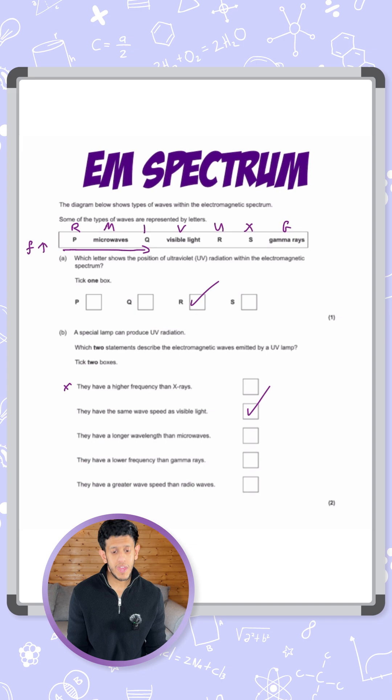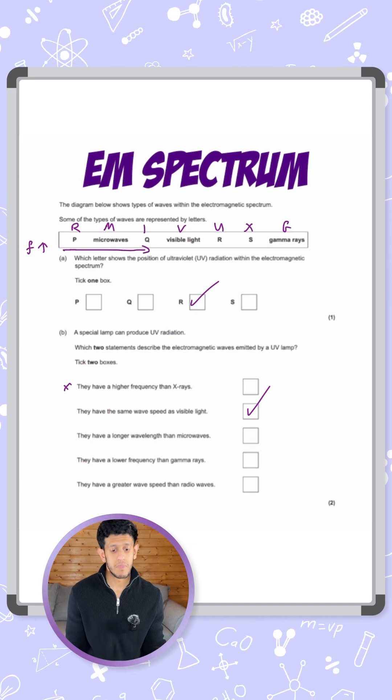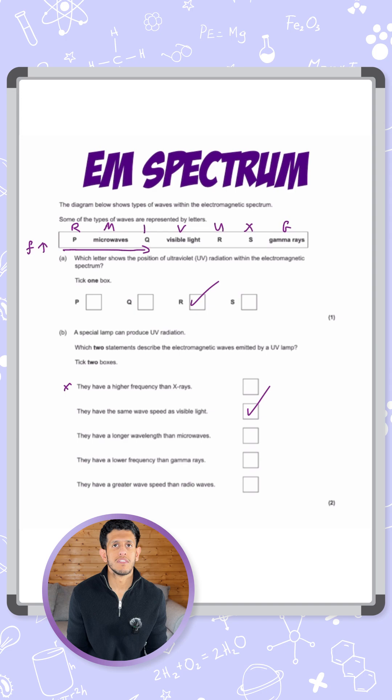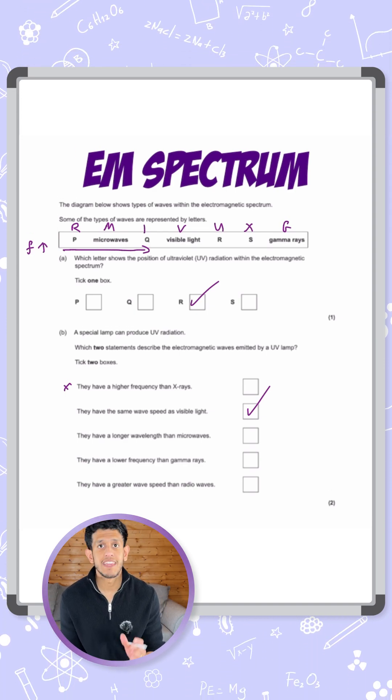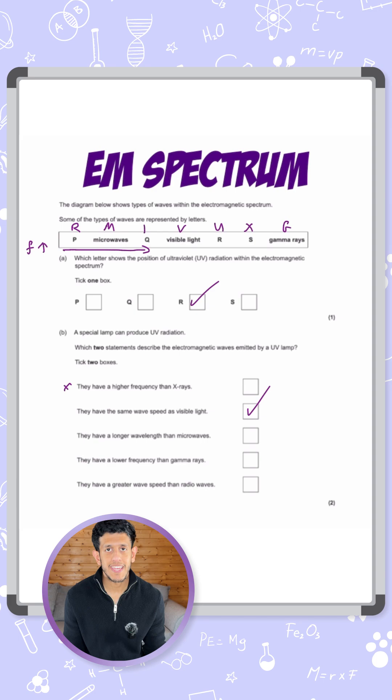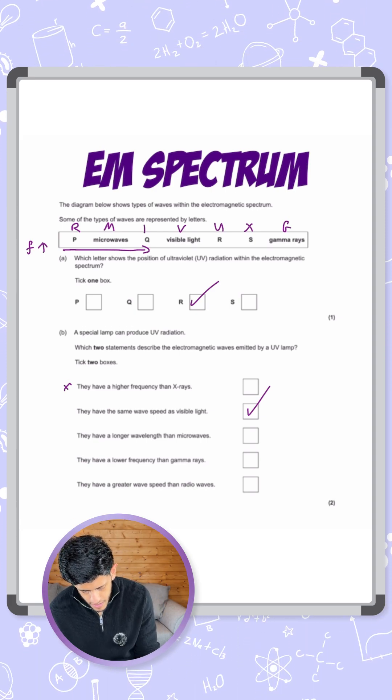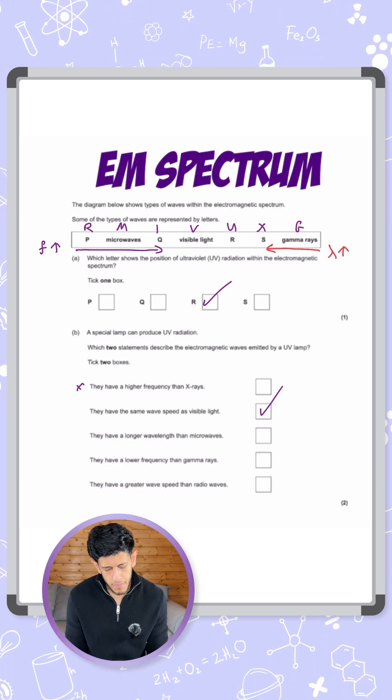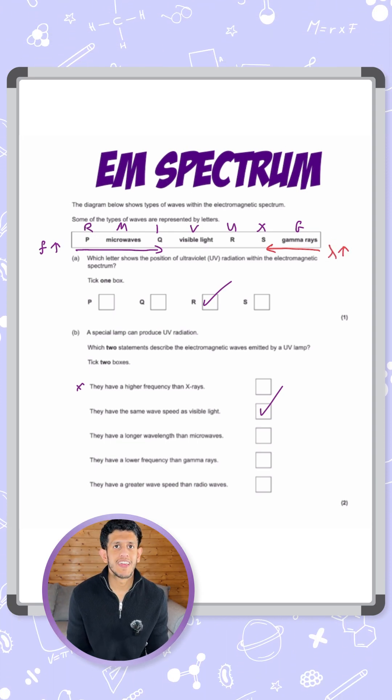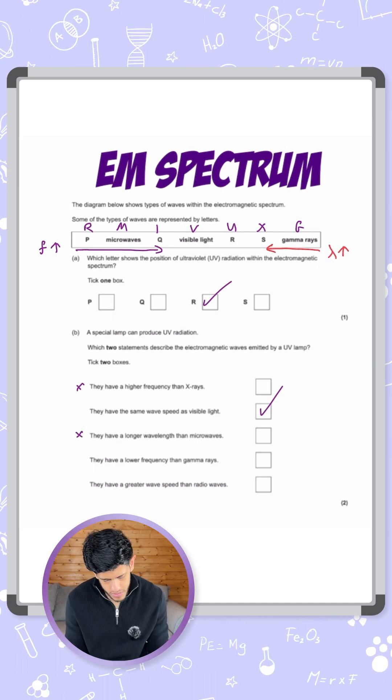It says they have a longer wavelength than microwaves. Again, for frequency it increases from left to right as you can see in the spectrum at the top. But for wavelength it increases the other way. Gamma rays have the lowest wavelength and radio waves have the greatest wavelength. So on the left hand side, it increases in wavelength from gamma to radio. If that's the case, microwaves have a longer wavelength than UV. So in that case this isn't true. I'll put a cross here.